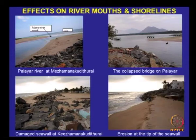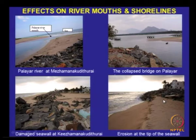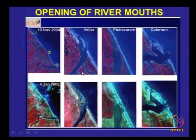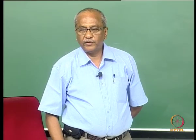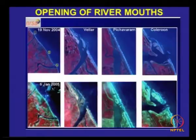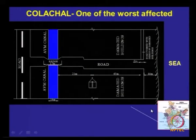As I said earlier, the bridge completely collapsed, the sea wall was completely disturbed, and all the river mouths opened in this region. That is the Wellar — the Madurai region is slightly south of Chennai, around 300 to 500 kilometers away. You see all the opening of the rivers, and this was one area where it was quite devastating.